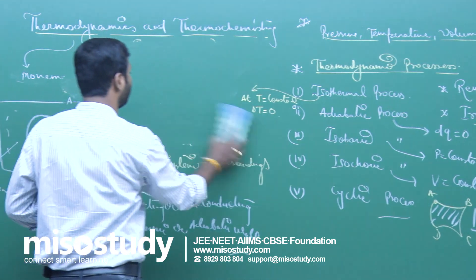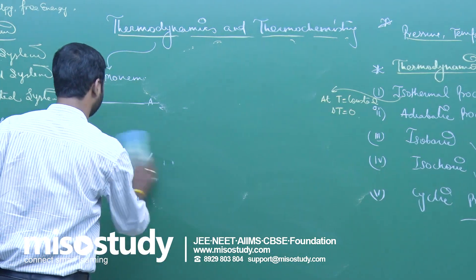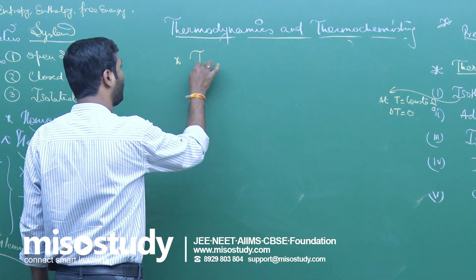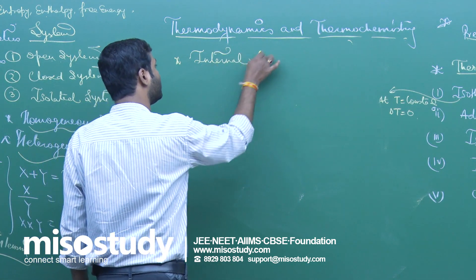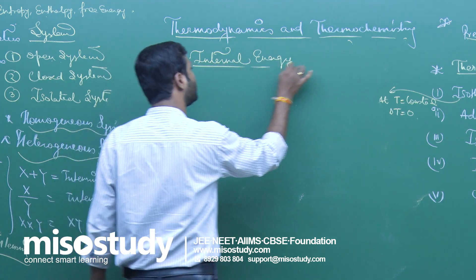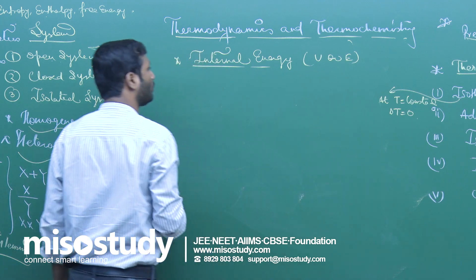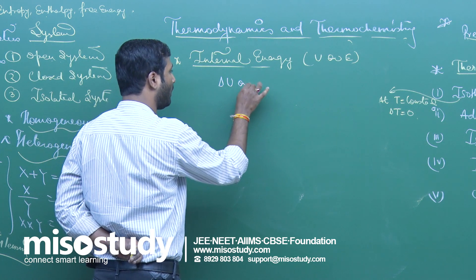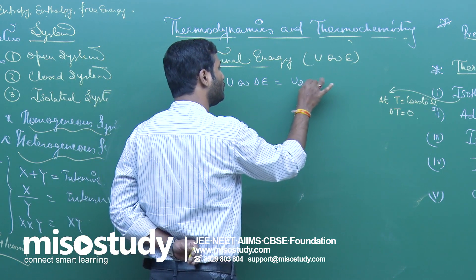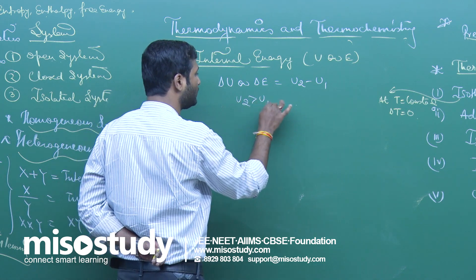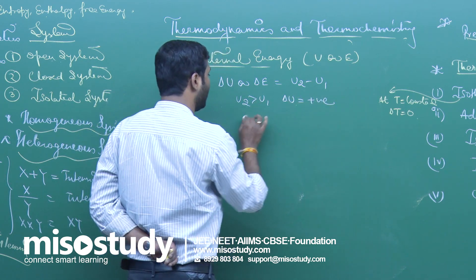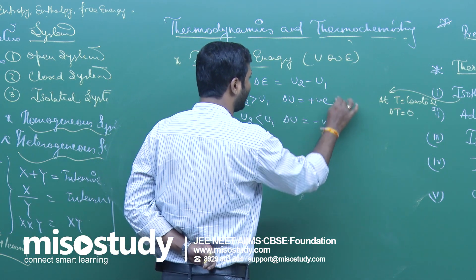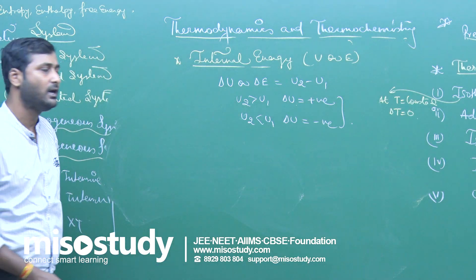The next topic is internal energy. The total of all possible kinds of energy present in a system or body is known as internal energy, represented by U or E. Delta U or delta E equals U₂ minus U₁. If U₂ is greater than U₁, then delta U is positive. If U₂ is less than U₁, then delta U is negative — so internal energy of a system may be positive or negative.